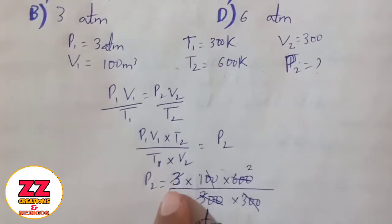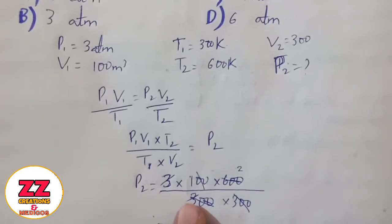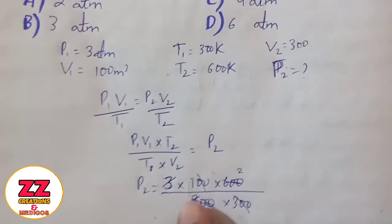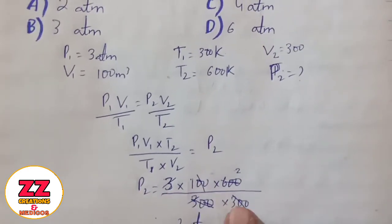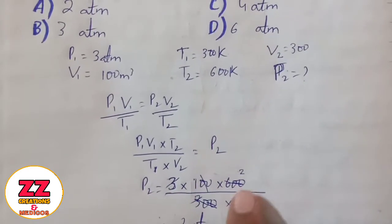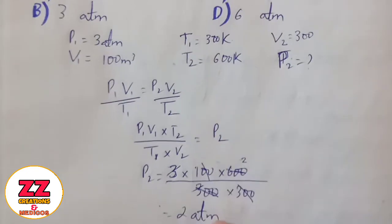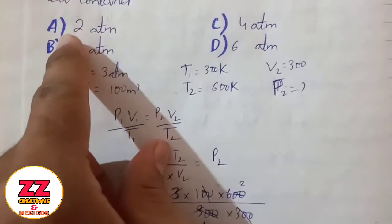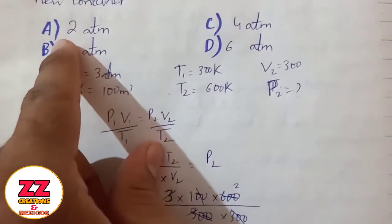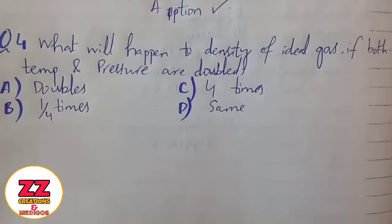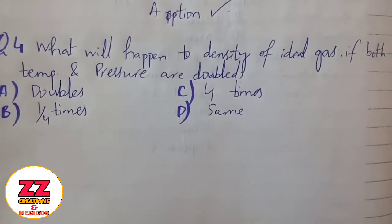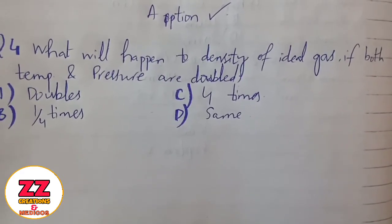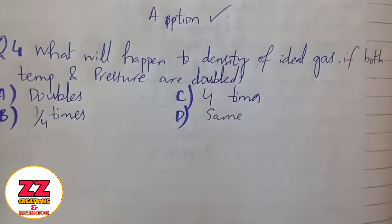Putting in the given data, we work from 300 K to 600 K and the 300s cancel, leaving only 2. So option A is correct.